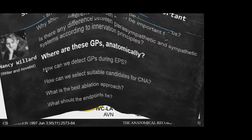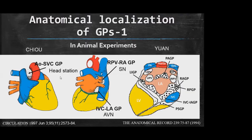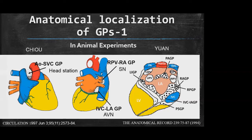In animal experiments, there are two mainly used classification systems for ganglionated plexus sites. Chiu et al. defined three GP areas in the atrium: the aorto-superior vena cava GP, the right atrium and right pulmonary vein GP, and the inferior vena cava left atrial GP. Yohan et al. studied the same animal specimens and defined more than five ganglionated plexus areas. Today, Chiu's three-GP definition is not entirely accurate anatomically, but we still use this nomenclature to understand innervation principles of the sinus node and AV node.